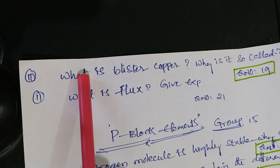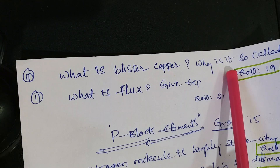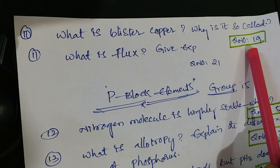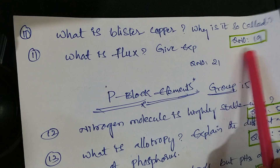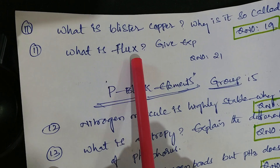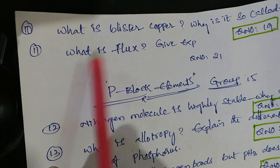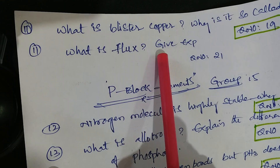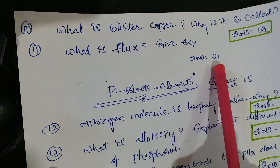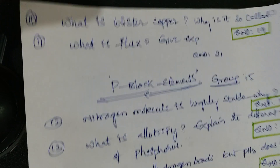Next, same metallurgy: what is blister copper and why is it so called - that is question number 19. Next: what is flux? Give an example - that is question number 21 from material.